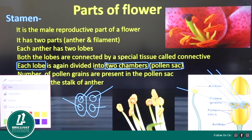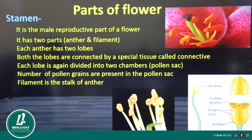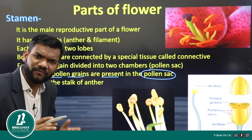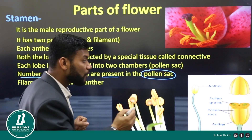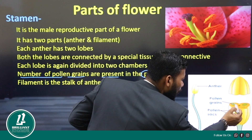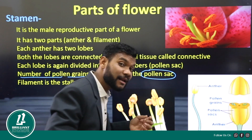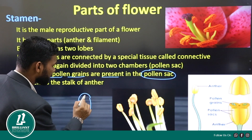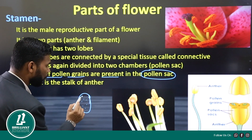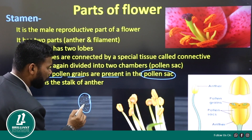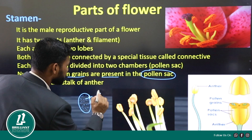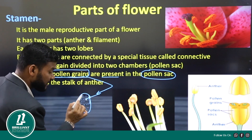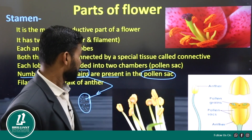Inside each pollen sac, there are a number of pollen grains present. These are many powder-like small particles which are called pollen grains. So a number of pollen grains are present inside each anther.